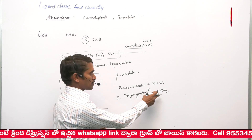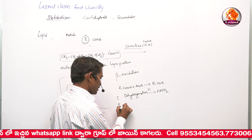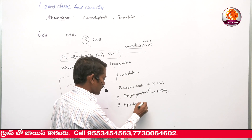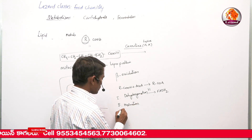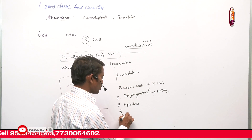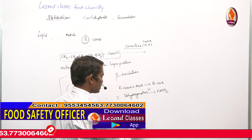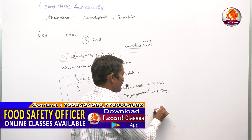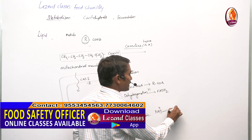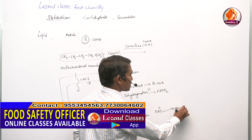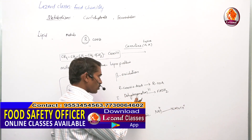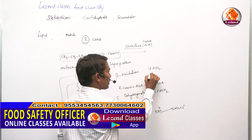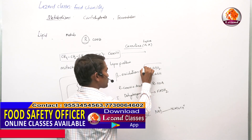Similarly, it then undergoes hydration, accepting a water molecule, and becomes ketoacyl-CoA. Then in the fourth stage, it undergoes one more dehydrogenation. This time, the electrons are accepted by NAD⁺, which is reduced to NADH + H⁺. So for every one round of beta-oxidation, it generates one FADH2 and one NADH molecule in reduced forms.